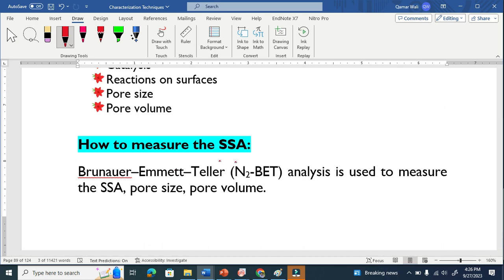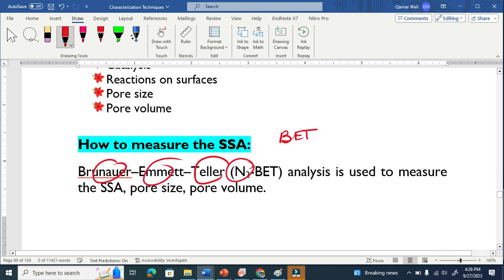We use basically this BET technique which is very very common. The three scientists have this name here. They developed this method, nitrogen-based absorption method. And because of this method, we usually get the specific surface area of material. We also get the pore size and pore volume. Once we get the pore size here, the size, the pore size.